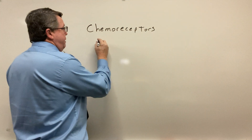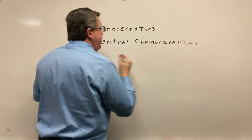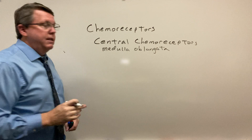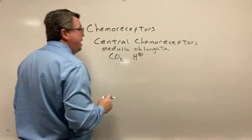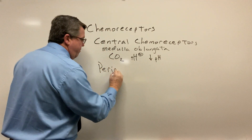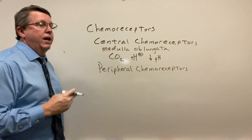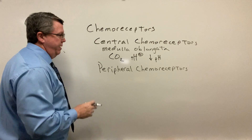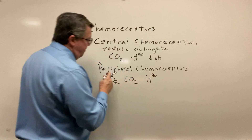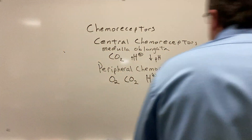There are two types. The first type is our central chemoreceptors, and these are going to be found up in the medulla oblongata, which is in the brain stem. These are going to sense the amount of carbon dioxide and the amount of hydrogen ions in an area. Remember, as I increase the amount of hydrogen ions, I decrease the pH. The second type are peripheral chemoreceptors, and these are going to be found in areas such as the carotid arteries and also in the aorta. These are going to measure the amount of oxygen, the amount of carbon dioxide, as well as the amount of hydrogen ions. The key difference is that peripheral chemoreceptors measure oxygen whereas the central ones do not.